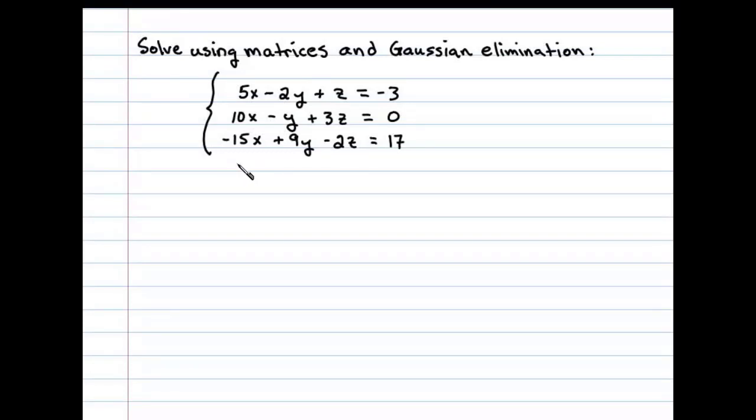Here we're asked to solve a linear system using matrices and Gaussian elimination. Let's begin by writing the corresponding augmented coefficient matrix. Now the goal is to find an equivalent matrix in upper triangular form. We'll use the elementary row operations.